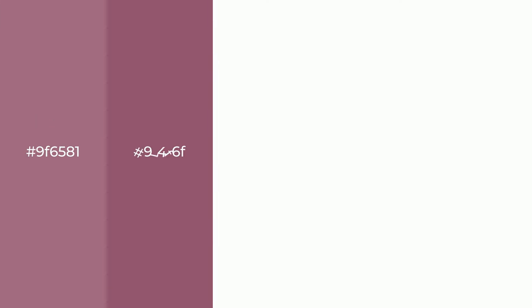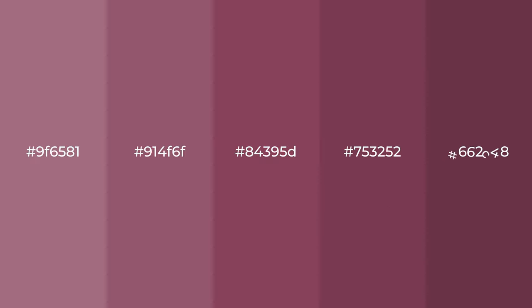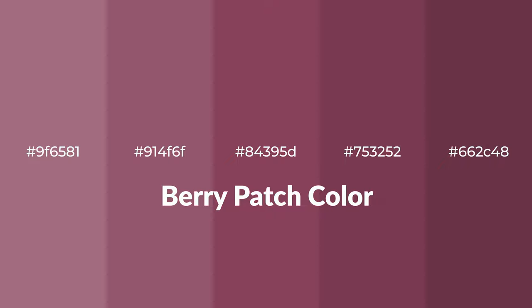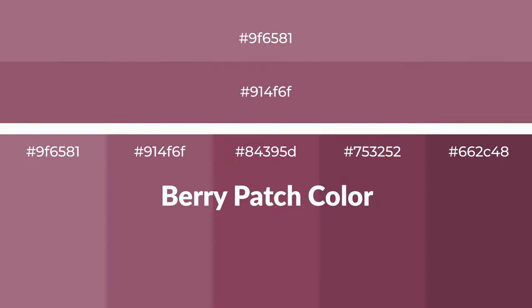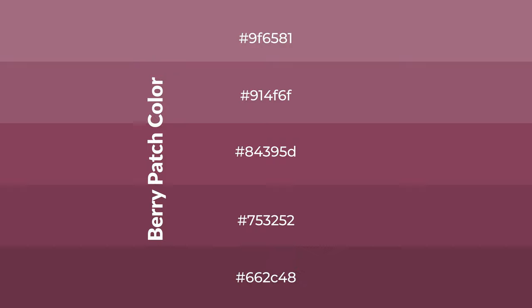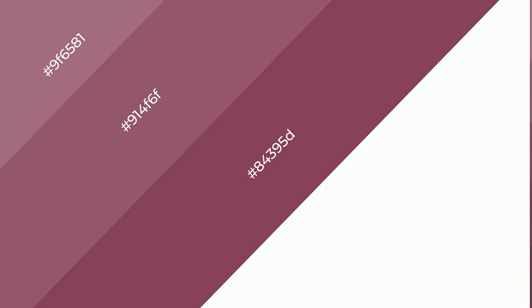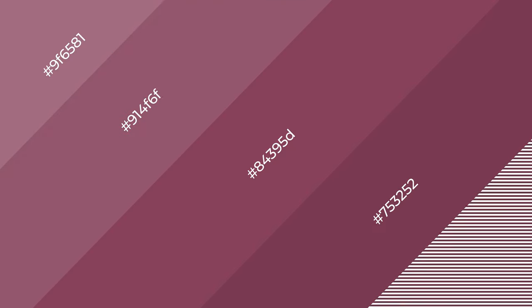Warm shades of berry patch color with red hue for your next project. To generate tints of a color, we add white to the color. Tints create light and exquisite emotions. To generate shades of a color, we add black to the color, and it is used in patterns, 3D effects, and layers. Shades create depth and drama.